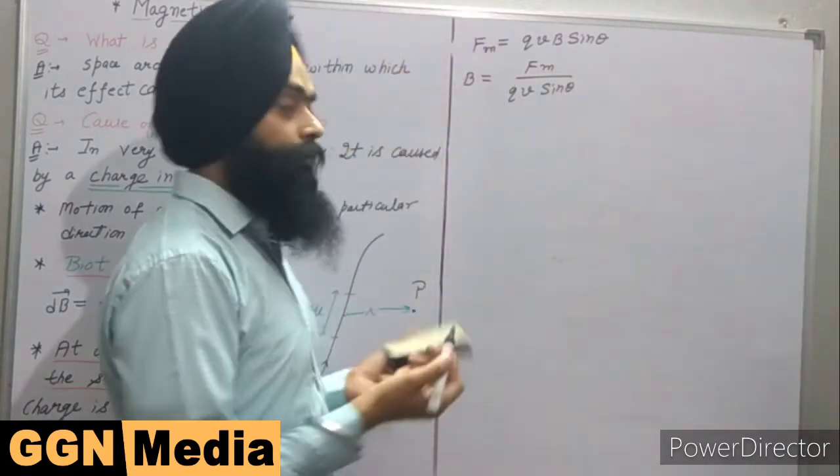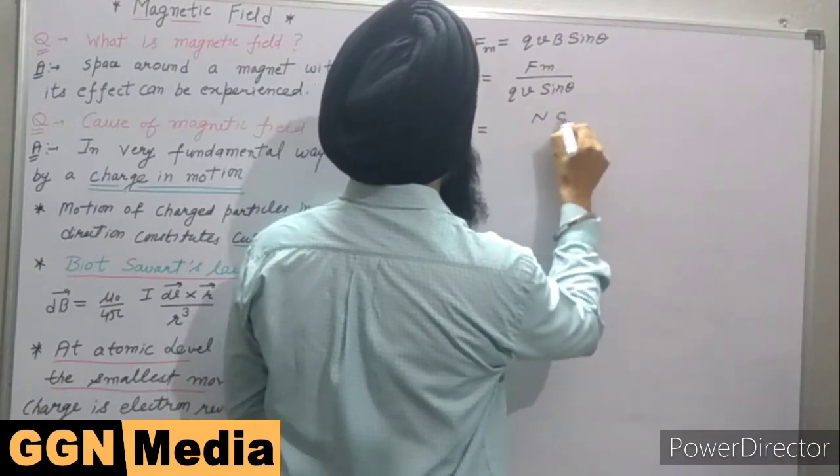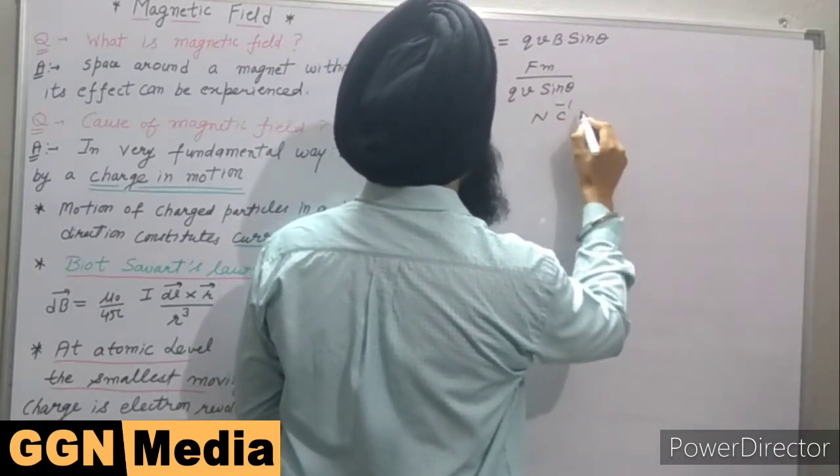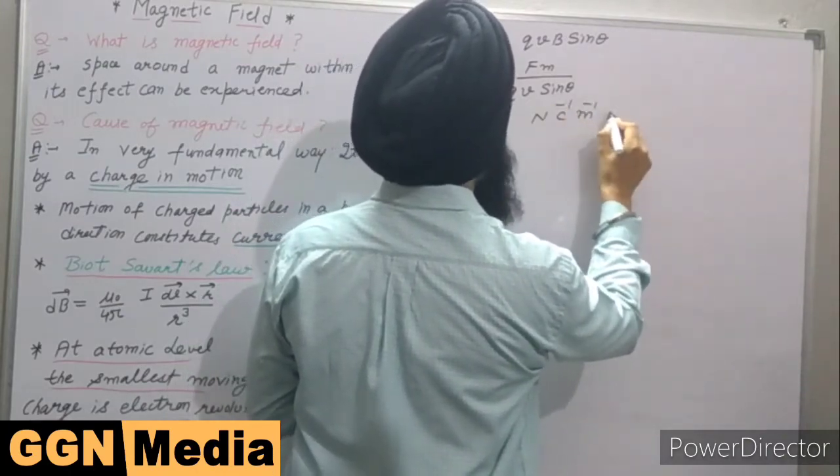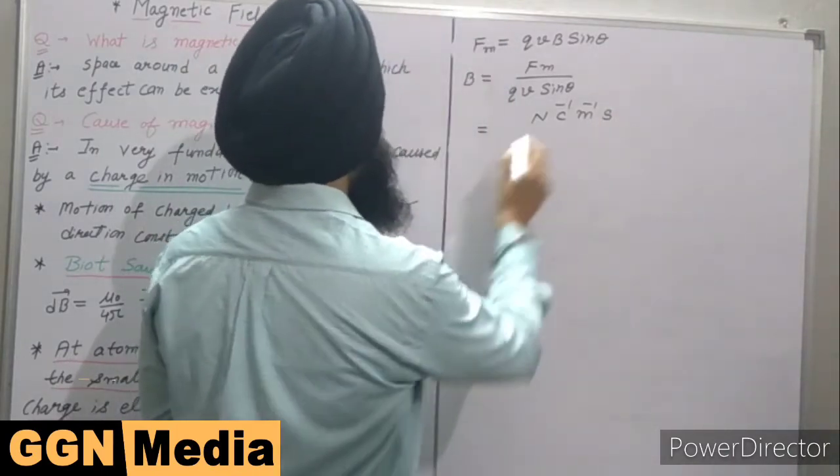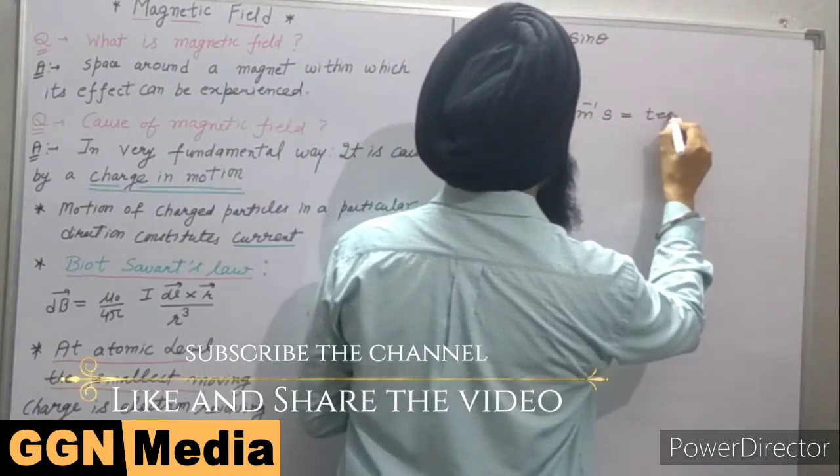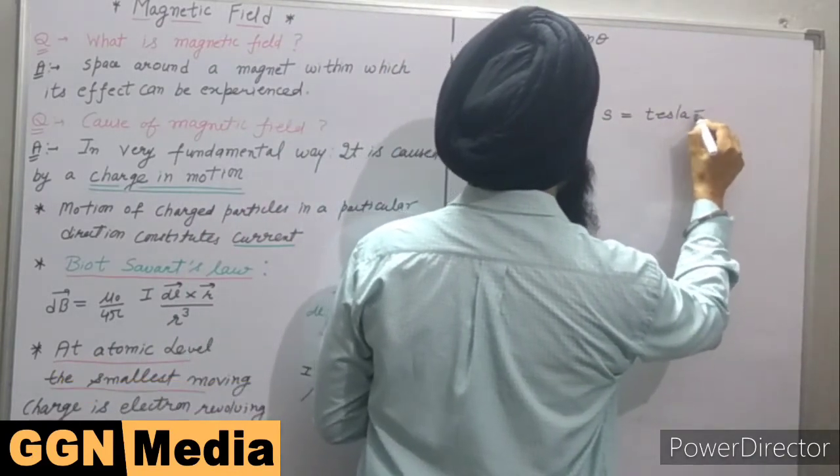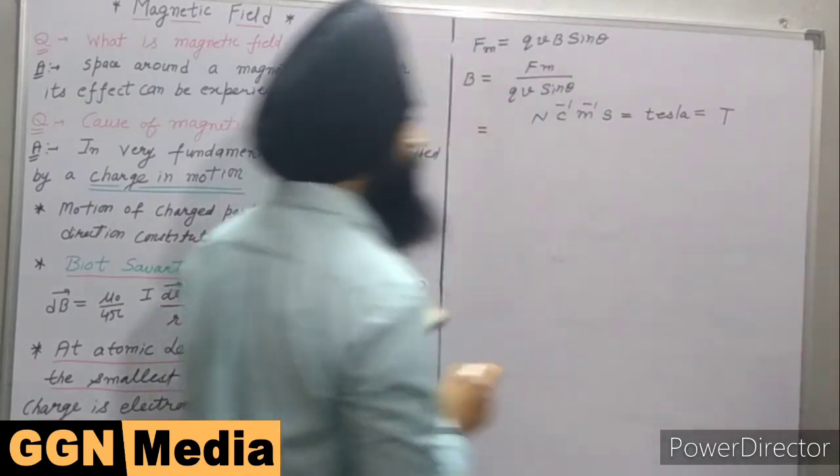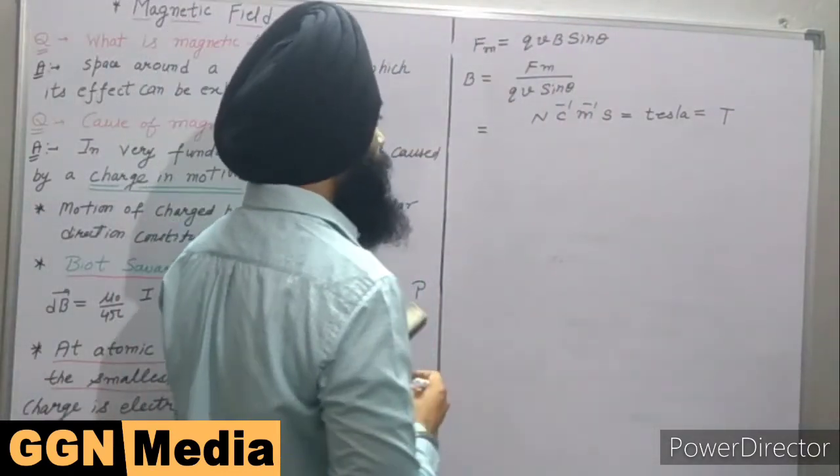Since theta is a dimensionless quantity, from here we can calculate the units: Newton per coulomb per meter per second. This is called Newton per coulomb meter per second, which is called Tesla, or it is represented by capital T. So these are the units of magnetic field.